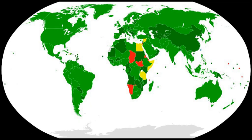The Convention on the Prohibition of the Development, Production and Stockpiling of Bacteriological and Toxin Weapons and on their Destruction, usually referred to as the Biological Weapons Convention (BWC) or Biological and Toxin Weapons Convention (BWC), was the first multilateral disarmament treaty banning the production of an entire category of weapons. The Convention was the result of prolonged efforts by the international community to establish a new instrument that would supplement the 1925 Geneva Protocol.